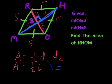And you can see it doesn't really matter which one you call diagonal 1, which one you call diagonal 2. So that's like 3 times 8, which is 24 square units.